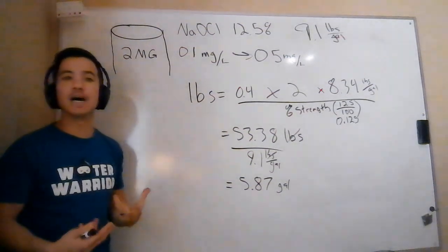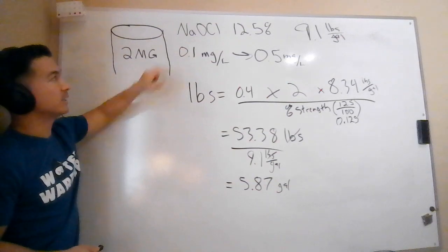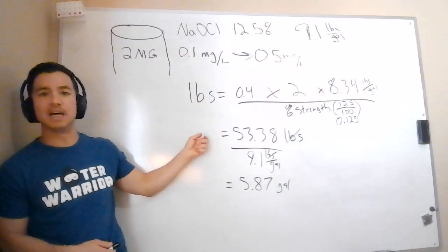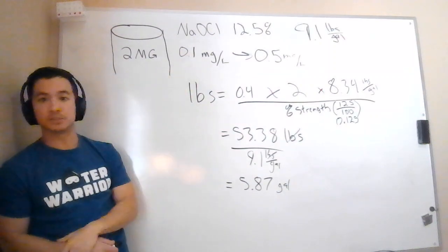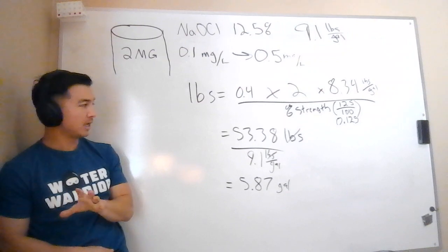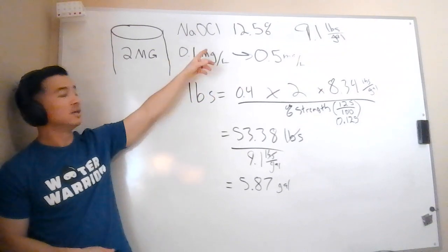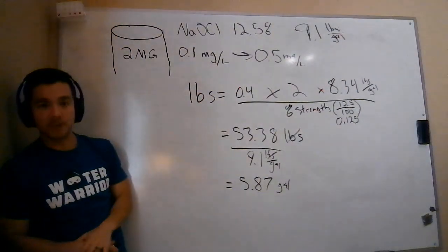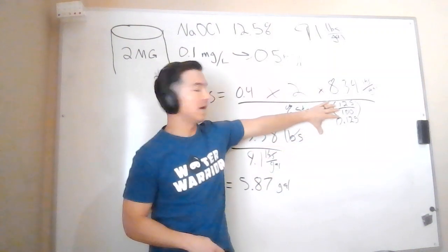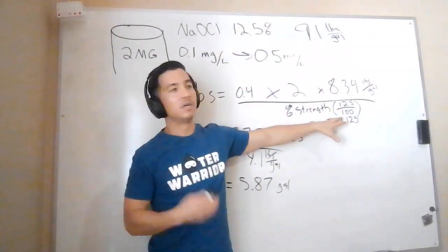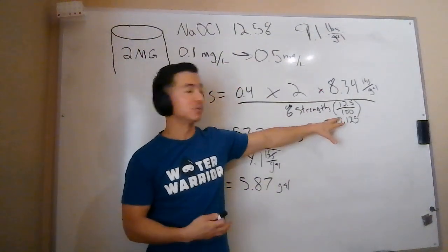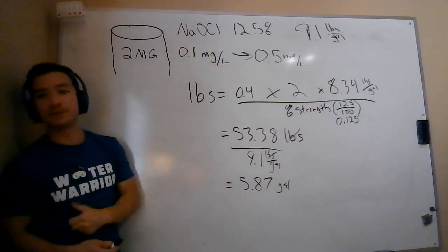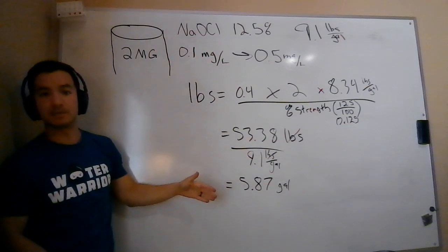A question to think about logically: what if I was dosing with a disinfectant that was 50% chlorine? Would I need to add more or less if my concentration was greater? Hopefully you're saying less — we would need to add less because our concentration of chlorine is higher. If this was chlorine gas — 100% chlorine — we wouldn't even need the denominator, because it's 100 over 100. You add one pound of chlorine gas, you're adding one pound of chlorine, so the pounds formula calculation would be even simpler. But in most cases we're not dealing with a concentration of 100%, and these are the steps we need to take.